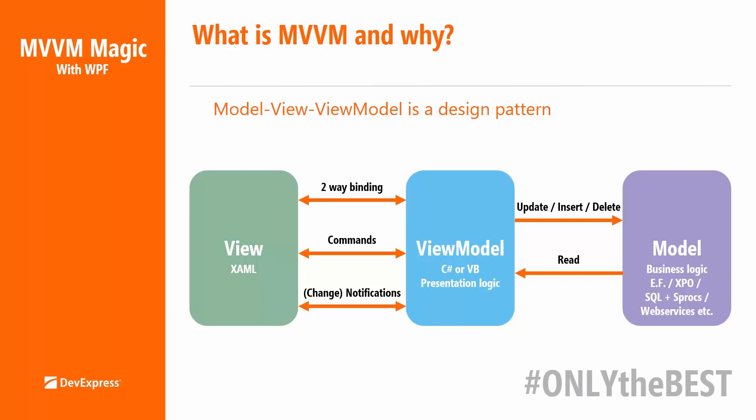An important aspect is change notification. Whenever something changes on the view, the view model is aware of that because of the binding mechanism. That means you can develop your presentation logic in the view model and you don't need to do all kinds of quirky little things in the UI. For instance, if you have a text box which should be enabled if you tick a check box, that is presentation logic — and it can be coded in the view model.